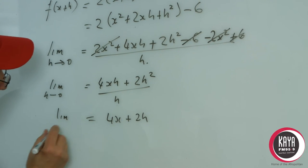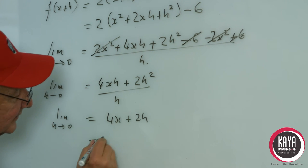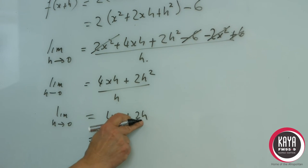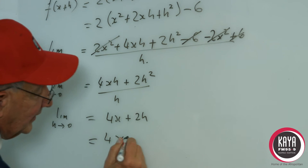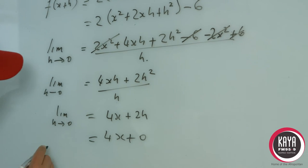And we have the limit as h tends to 0 and we get the answer of 4x, and as h tends to 0 we add 0 here. So that is the solution for f'(x).